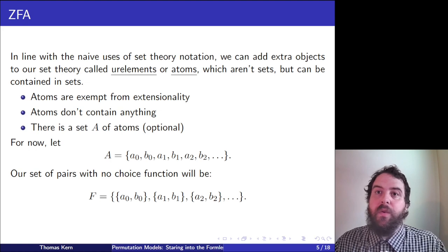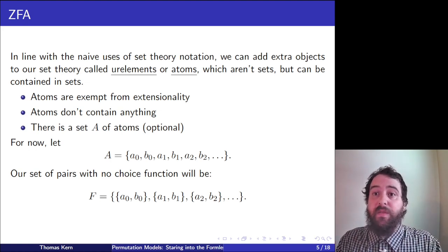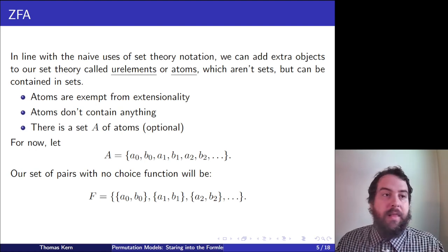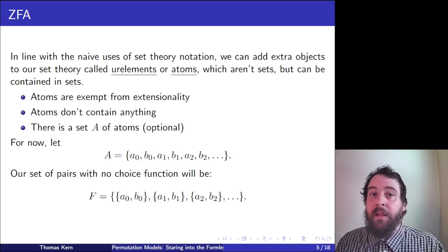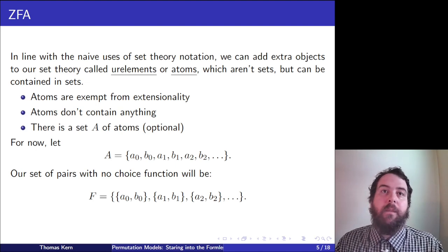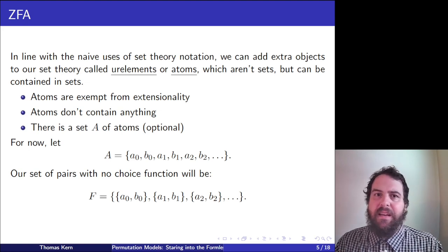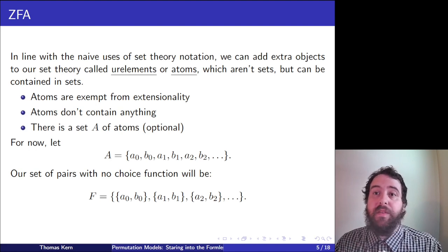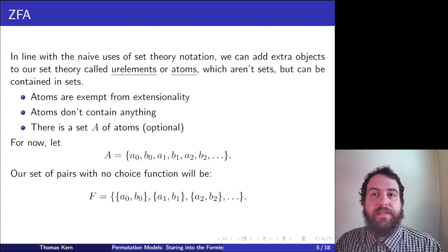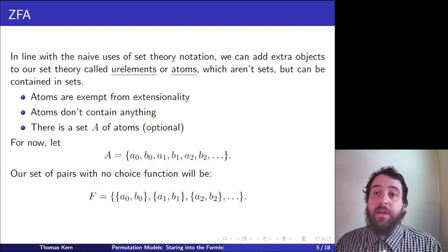Set theorists create their own set-theoretic universes all the time to study how properties of set theory relate to each other. But the tools they use are quite hefty. To use the specific tool in this video — permutation models — we're actually going to work with something slightly different: not quite a model of ZF set theory, but a model of ZFA, ZF set theory with atoms, sometimes called urelements.